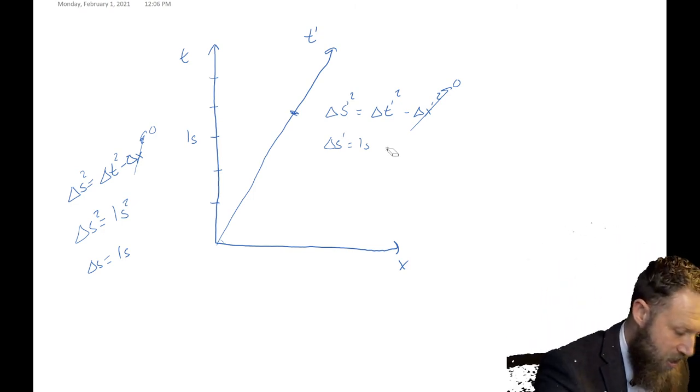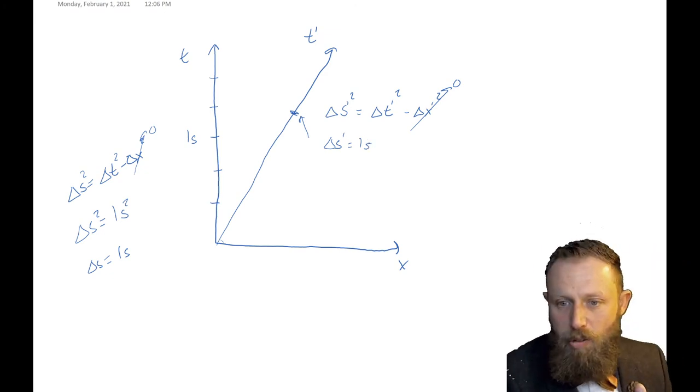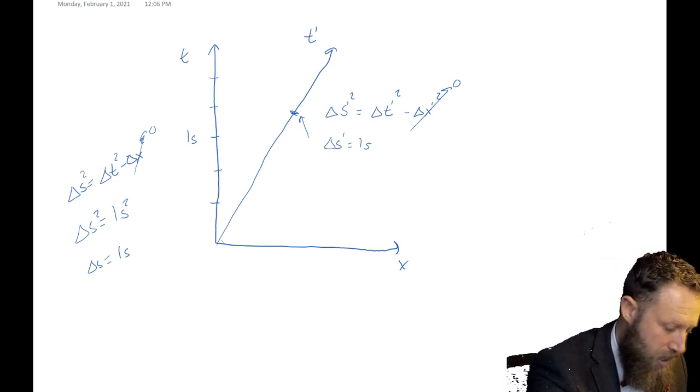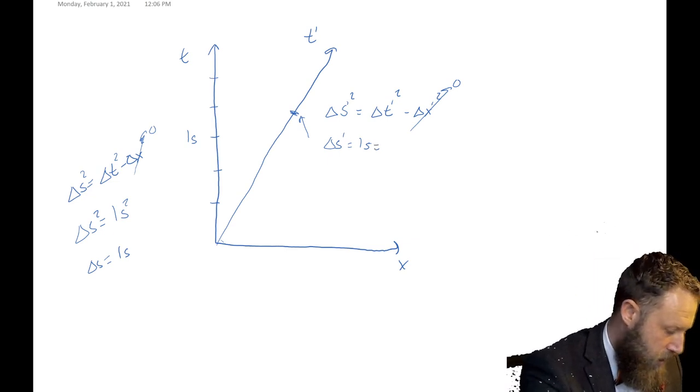So basically, the space-time intervals are the same across all things. What changes is that if we try to write this delta s prime in terms of x coordinates, in terms of not primed coordinates, so we have it in terms of prime coordinates, let's write it in terms of not primed coordinates. Well, we know that the delta s prime and delta s are the same.